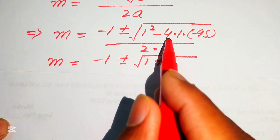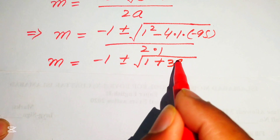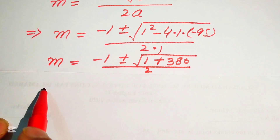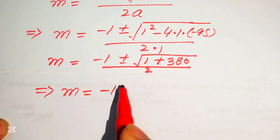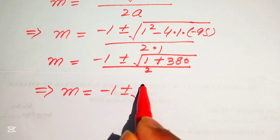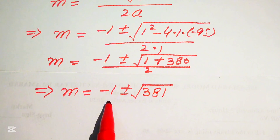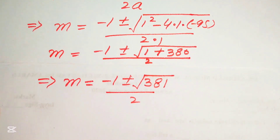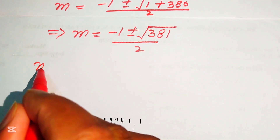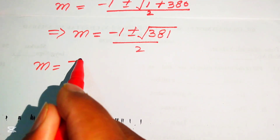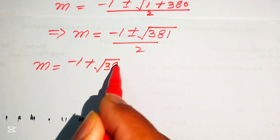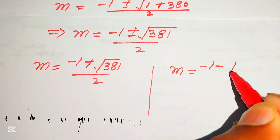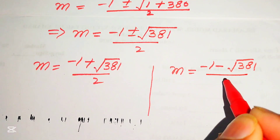Since -1 times -95 gives +95, and 4 × 95 = 380, we get m = (-1 ± √(1 + 380)) / 2 = (-1 ± √381) / 2. The two values of m are: m = (-1 + √381) / 2 and m = (-1 - √381) / 2.